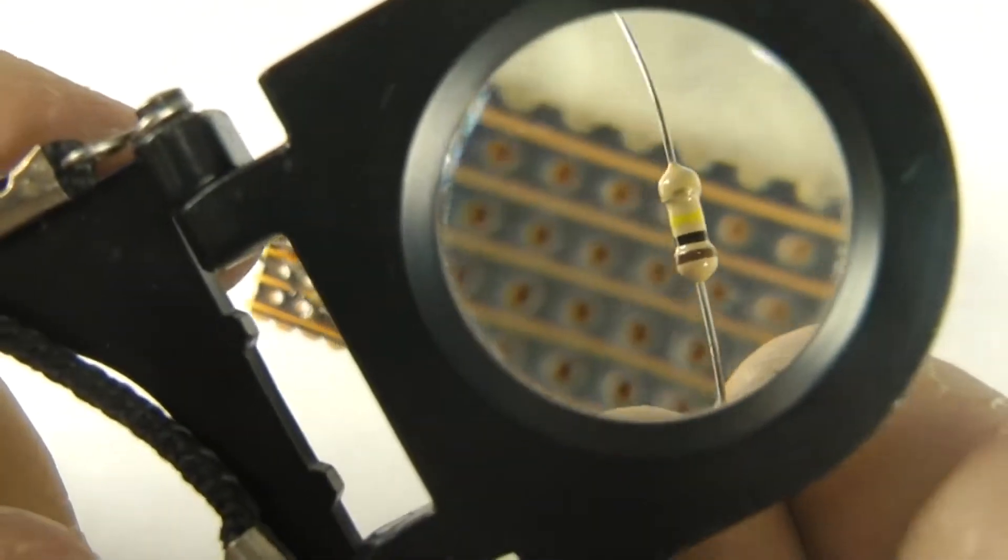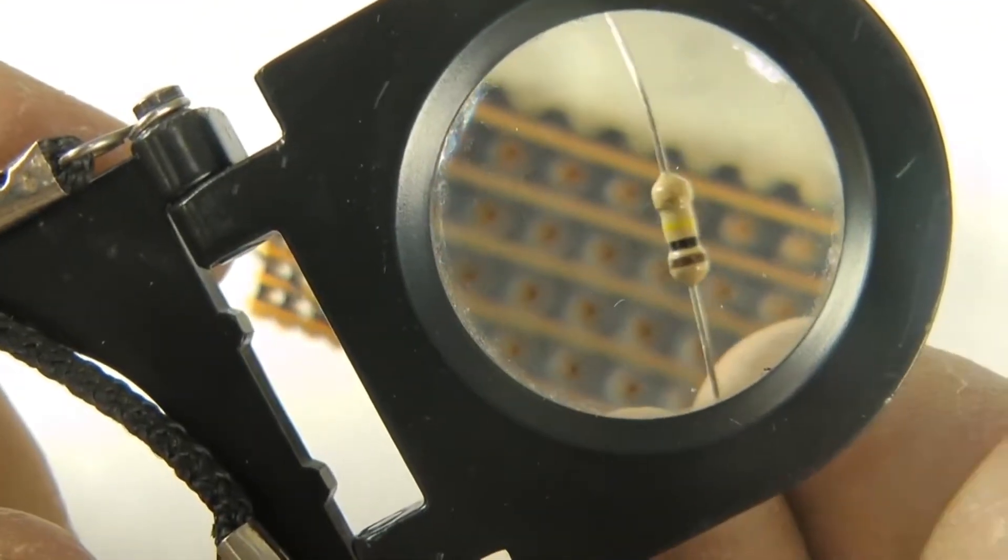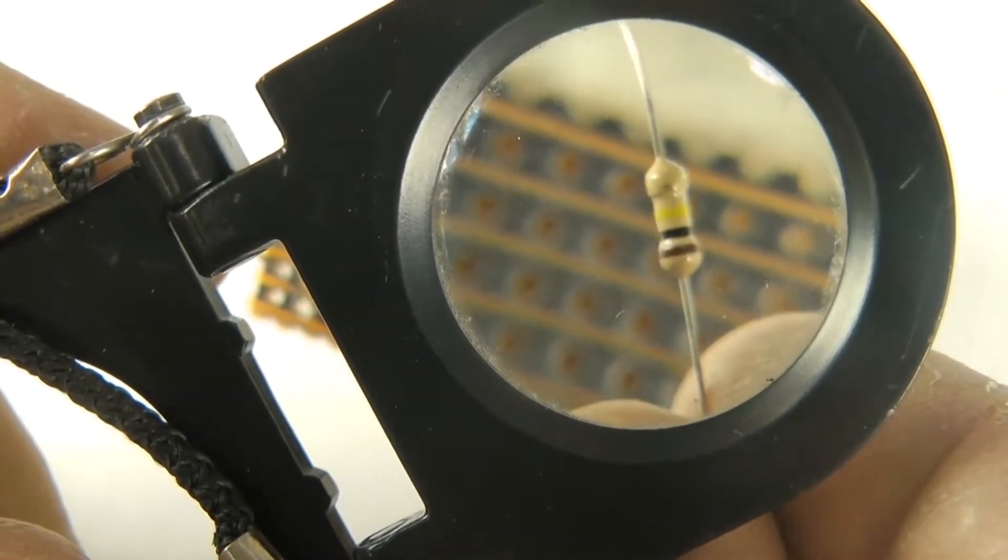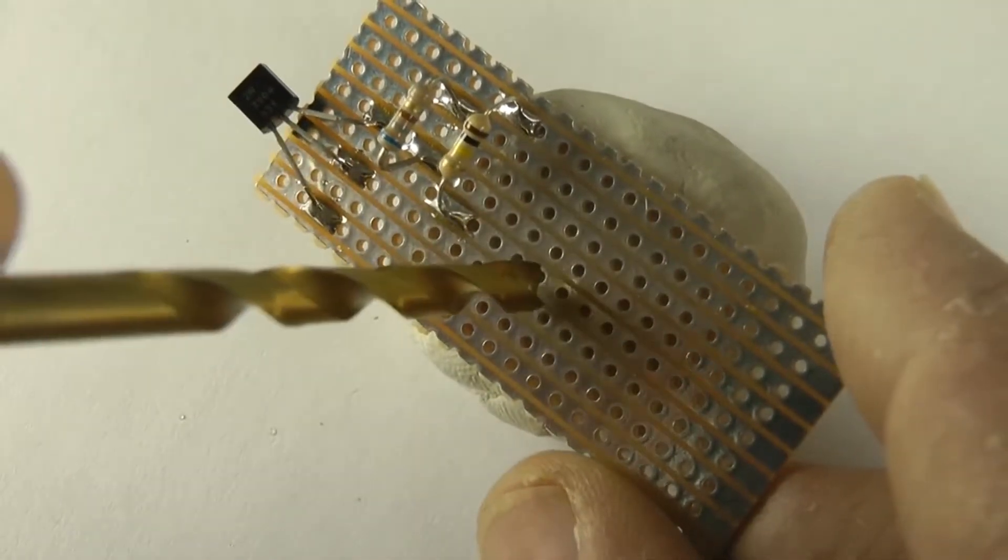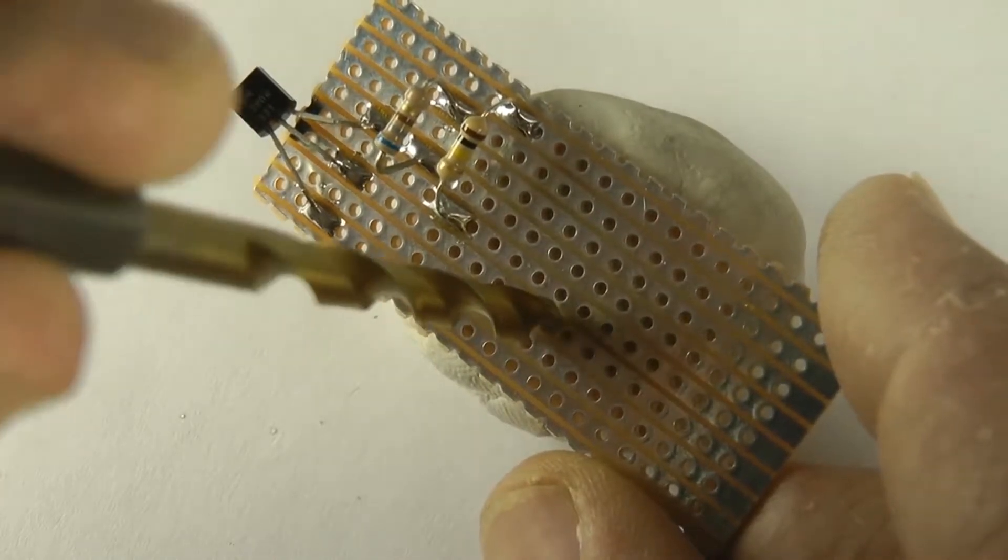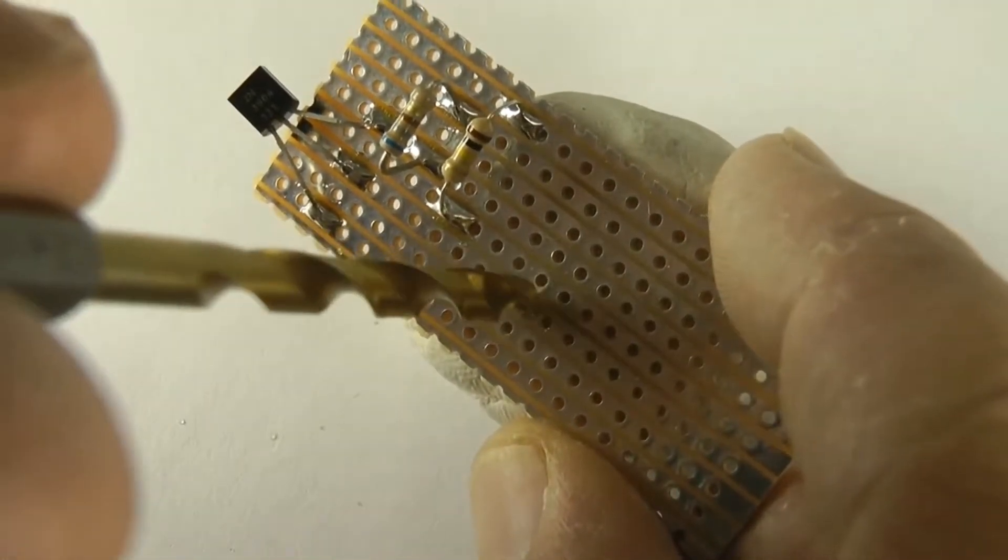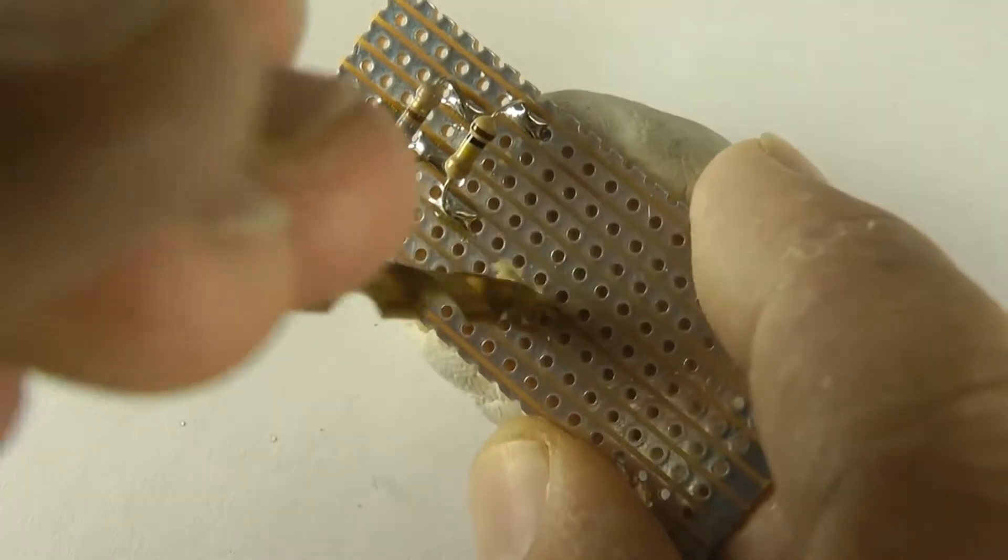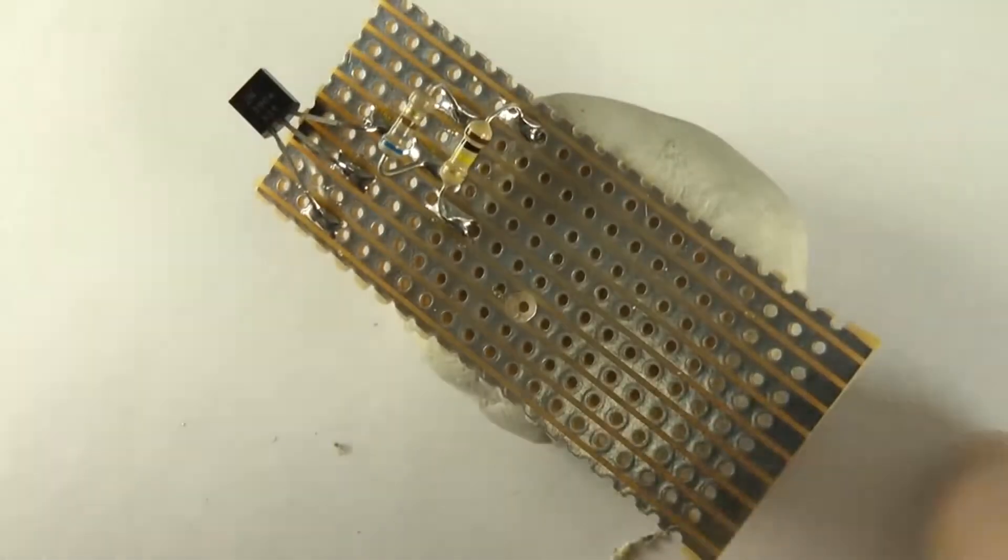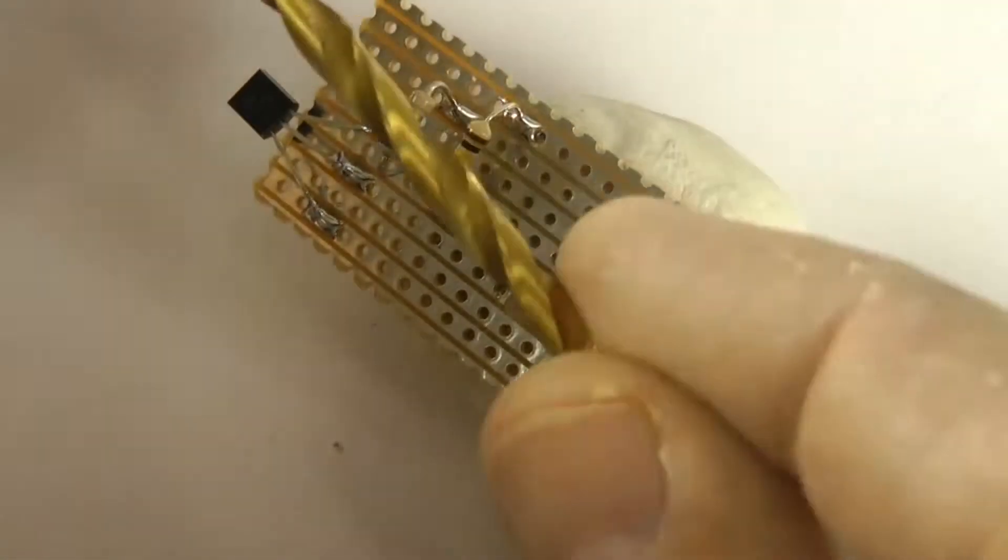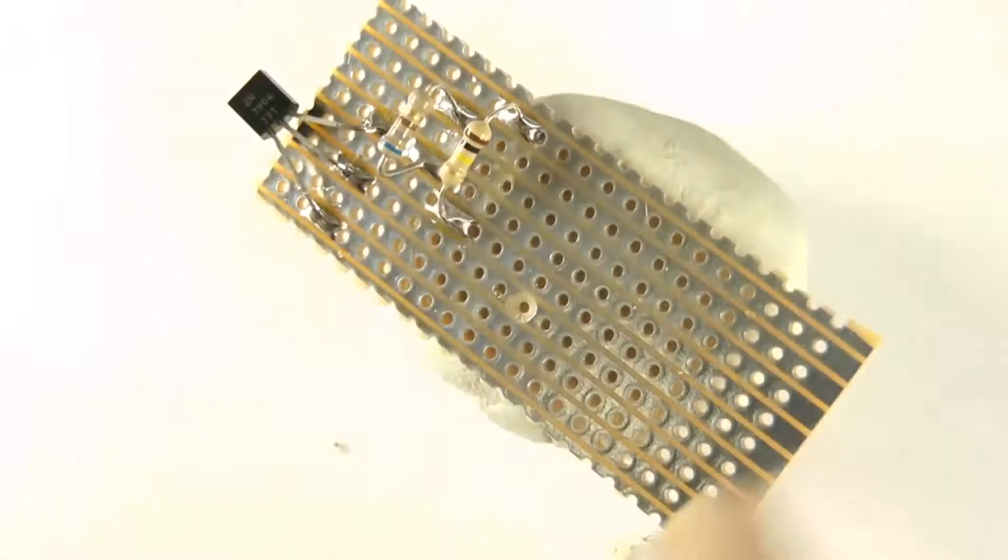This is a 100 kilo ohm resistor, which is brown, black, yellow and gold. The next thing I'm going to do, more or less in the middle of the board, is I'm going to make a break between what will effectively be the two transistors base connection, using a twist drill just in my hand, number five.